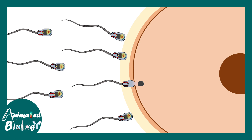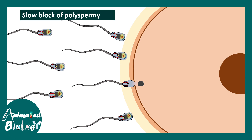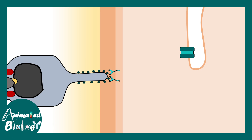Multiple sperm may reach the ovum nearly simultaneously, but once one injects its nucleus, the fast block reduces the chances of other sperm entering. However, this change is transient and needs to be more sustained. A more permanent change is triggered by the cortical granule reaction — vesicles filled with enzymes that fuse to the egg membrane in response to sperm–ovum union.